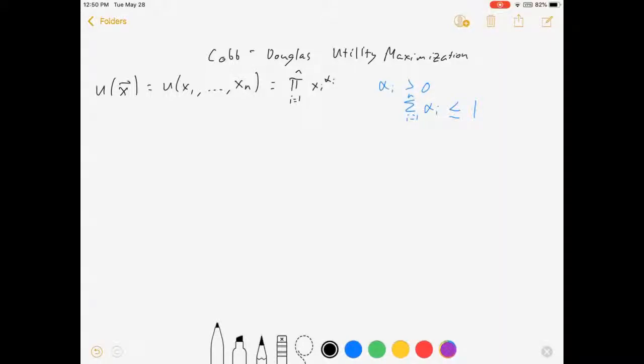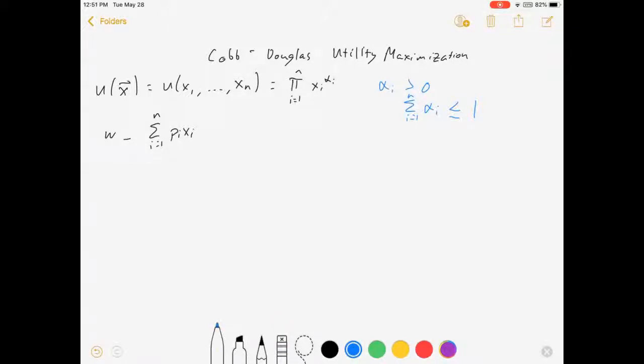All right, let's do our budget constraint next. Our wealth would normally have to be greater than or equal to the sum, i equals 1 to n of pi xi. But because of our blue condition, these combined tell us that it's going to be an interior solution, meaning this constraint will bind. So that is nice because it means we don't have to check Kuhn-Tucker conditions for corner solutions.